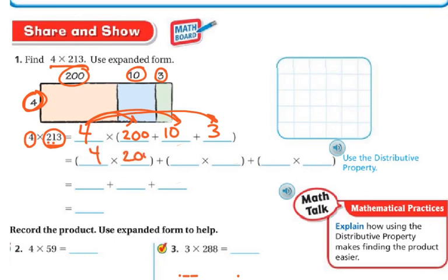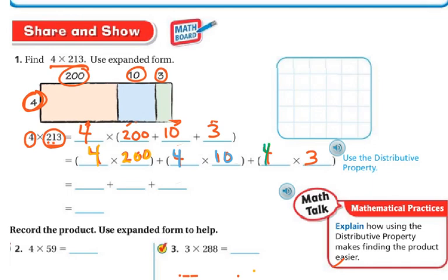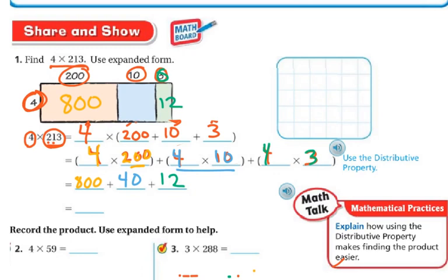So 4 times 200 in the orange box, 4 times 10 in the blue box, and 4 times 3 in the green box. 4 times 2 is 8, and then I have two zeros afterwards, so that's 800. Then 4 times 10: 4 times 1 is 4, add my zero for place value, that's 40. And finally in the green, 4 times 3 is 12. So this box is 12, and this box is 40.